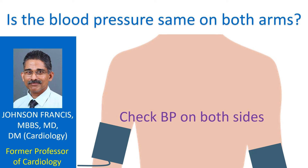Guidelines on hypertension and high blood pressure generally recommend measurement of blood pressure in both arms at the initial visit. They also suggest that the arm with the higher blood pressure recording should be used in subsequent visits. It is often mentioned that there is a small difference in blood pressure between the arms, and usually it is the right arm blood pressure which is higher.